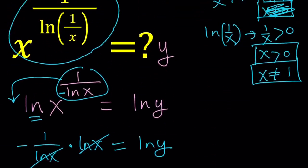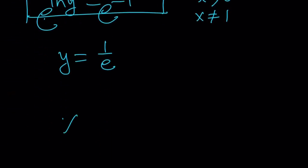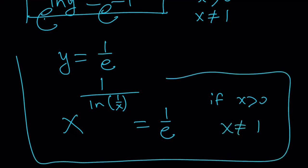So, let's go ahead and write this. x to the power of 1 over ln 1 over x equals 1 over e. If x is positive and different from 1. Make sense? Let me go ahead and show you a graph real quick. And we'll finish up. But the answer is 1 over e.